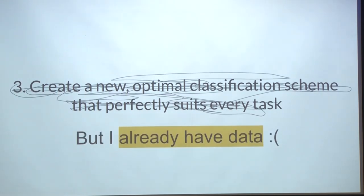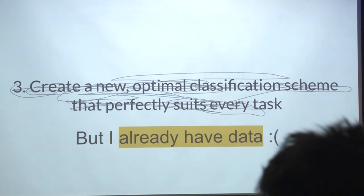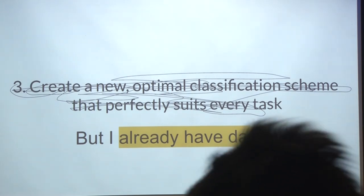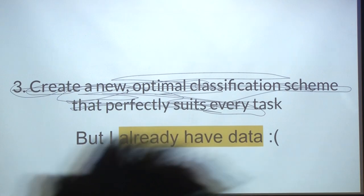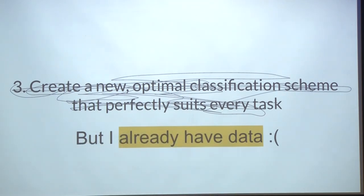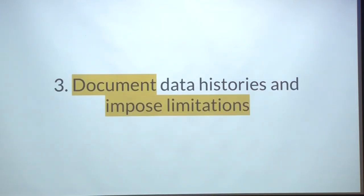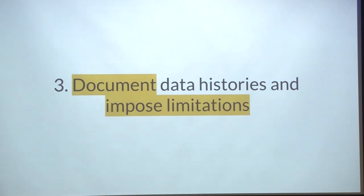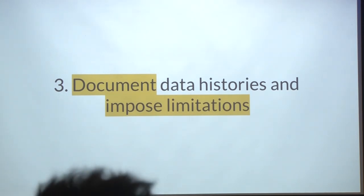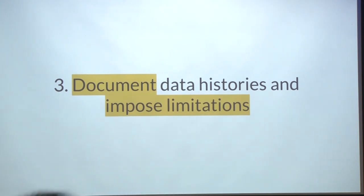Except that's obviously not reasonable, right? Sometimes you already have data — you're just given a data set — or you don't have the institutional power to challenge any of these things. And so in these situations, the thing that I find most helpful is to document the histories of the classification schemes that you encounter and impose limitations on the ways that you or users of your data sets can use them when these classifications are taken out of context.